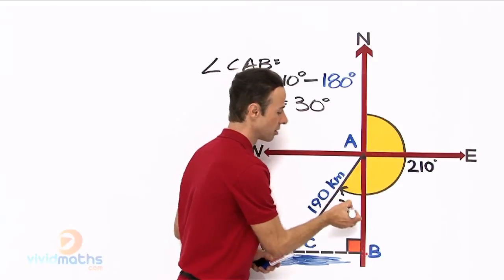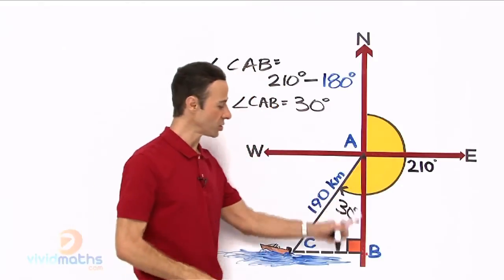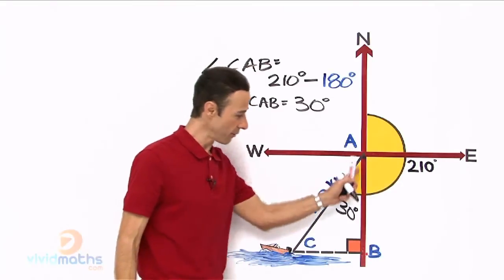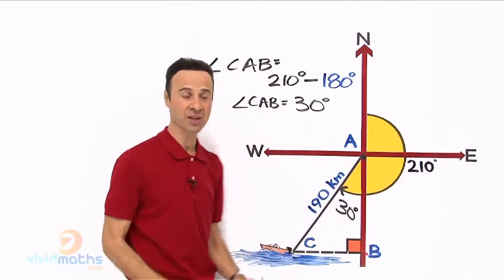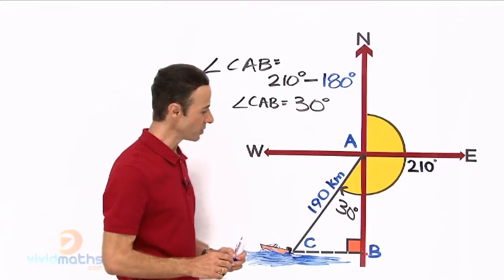That is 30 degrees in there. Let me just mark it out. Now it is basic trigonometry in this triangle here. It is a right angle triangle. We want to find out how far south from port A to that point down there, so how far south has this speed boat travelled.